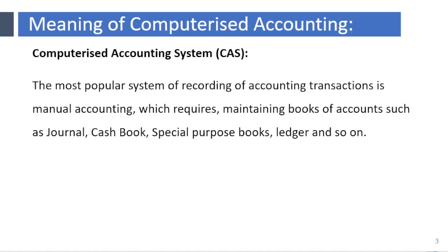Meaning of Computerized Accounting System. The most popular system of recording accounting transactions is manual accounting, which requires maintaining books of accounts such as journal, cash book, special purpose books, ledger, and so on. The role of the accountant is required to prepare a summary of all day-to-day business transactions and financial statements manually.